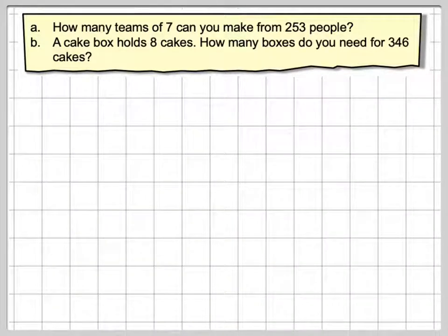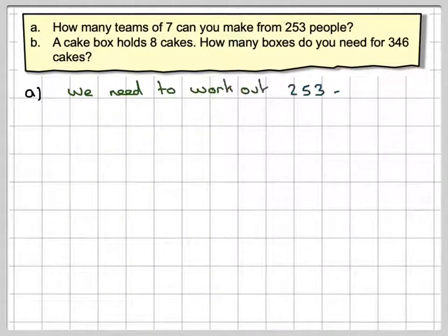Part A says how many teams of seven can you make from 253 people? So let's have a look at that first. The calculation that we need to do is 253 divided by seven.